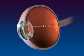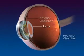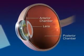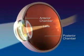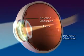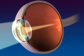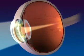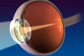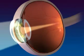The lens is located behind the pupil and between the anterior and posterior chambers. The lens is a transparent, flexible, biconvex structure that bends or refracts light rays so they focus on the nerve cells of the retina.